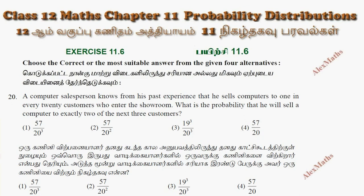Hi students, this is Alex here. Exercise 11.6, question number 20. A computer salesperson knows from his past experience that he sells computers to one in every 20 customers who enter the showroom. What is the probability that he will sell a computer to exactly two of the next three customers?